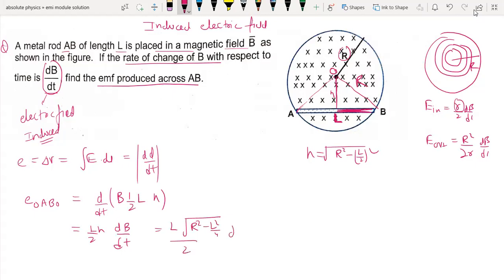H value will be equal to root R square minus L square by 4, by 2 into dB by dt. Now this is the loop O-A-B-O. In this setup, here we make the loops and adjustments.